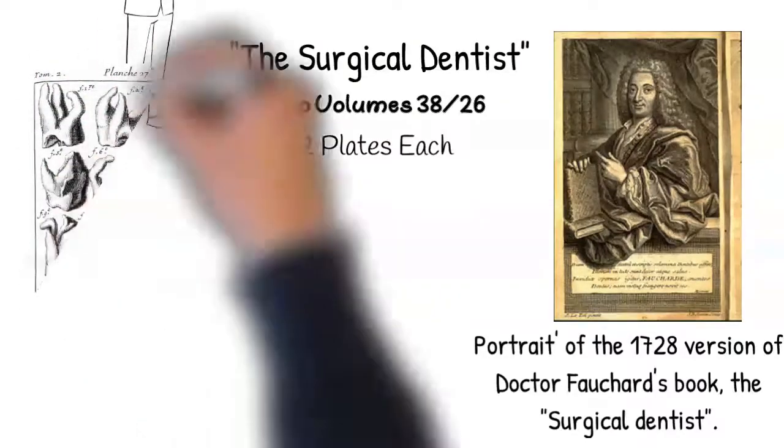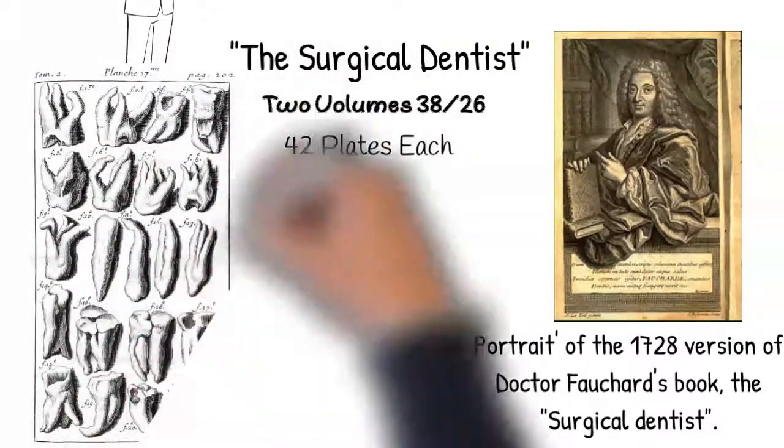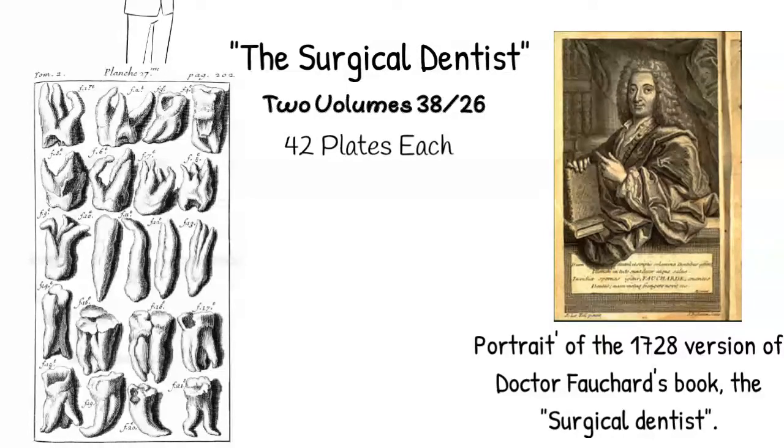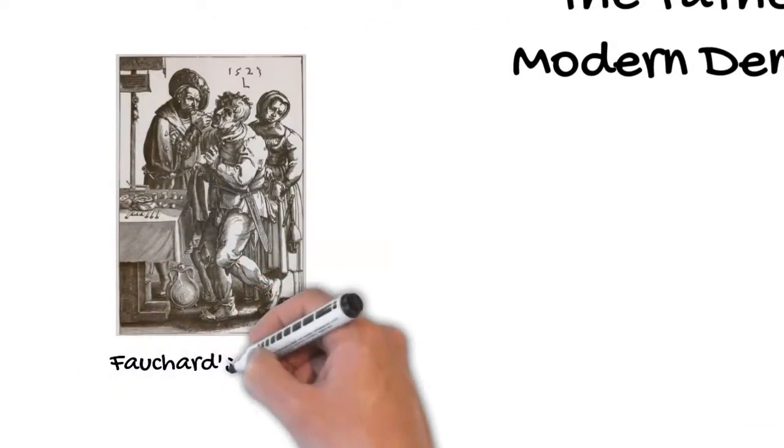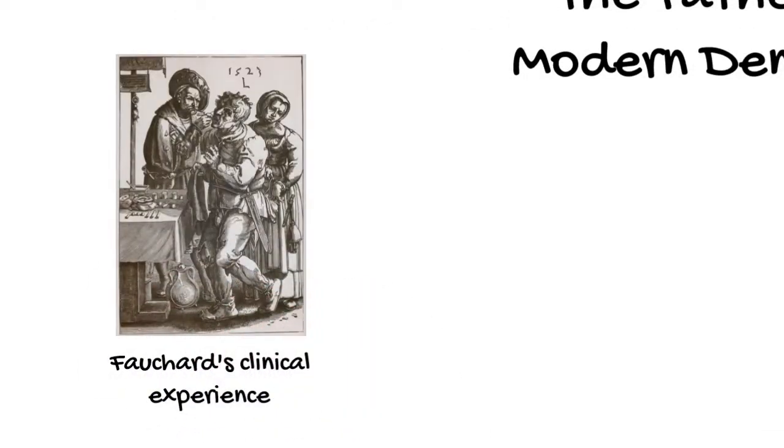The first volume deals with the anatomy of the teeth, oral hygiene, maladies of teeth and the gingiva, and ergonomics for the delivery of dental care. Volume 2 deals with clinical observations he had made in his 20 years of practice.